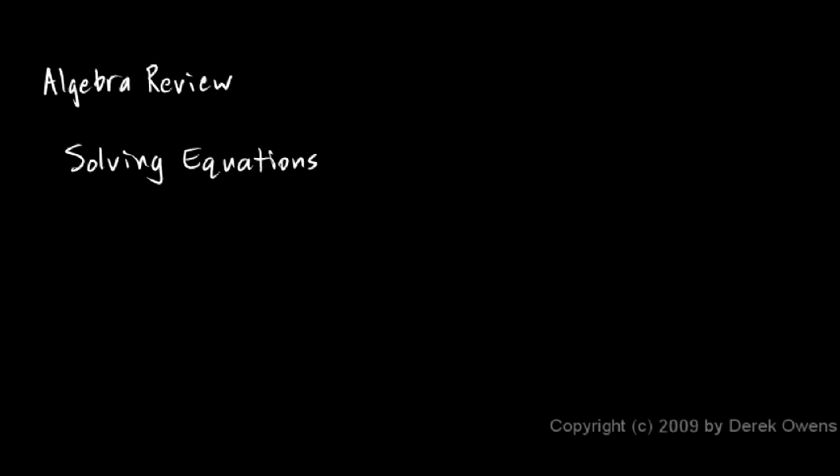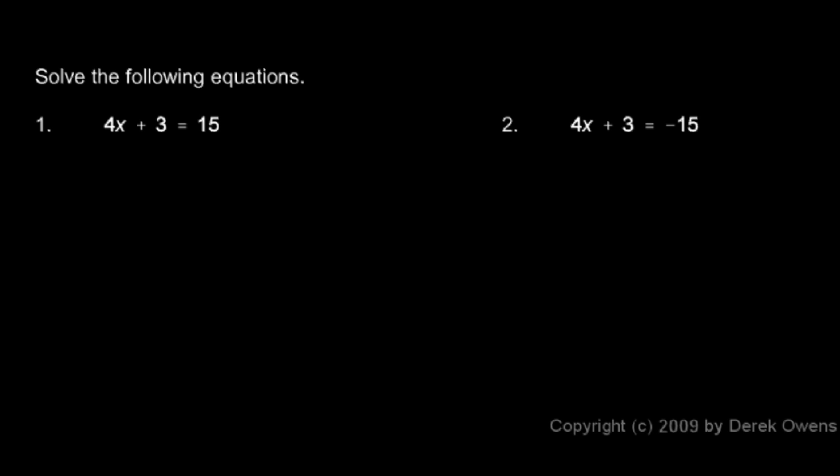In this case we're going to be solving linear equations, which means nothing is squared. They're not quadratic equations where something would be squared, or cubic equations where something would be cubed. These will all be linear equations. Here are the first two. The first one: 4x plus 3 equals 15. We want to solve this for x, so we need to isolate x. In other words, we want to manipulate the equation until it looks like x equals something.